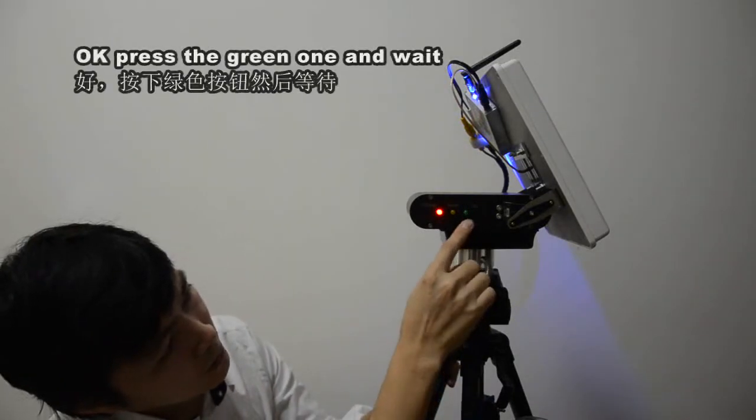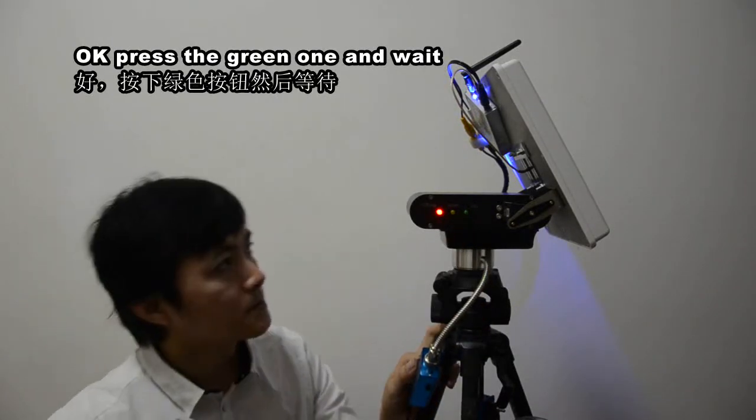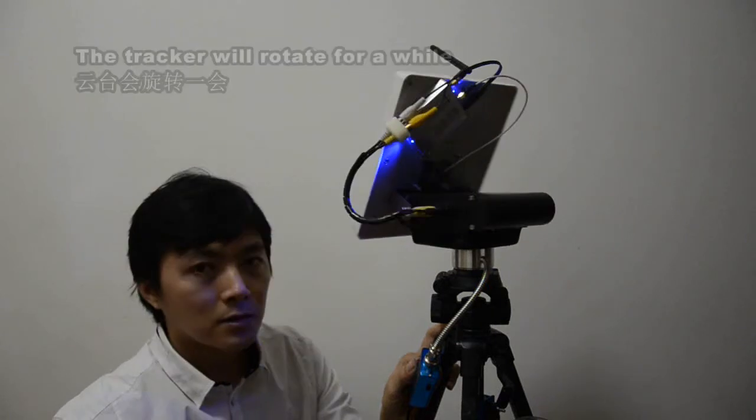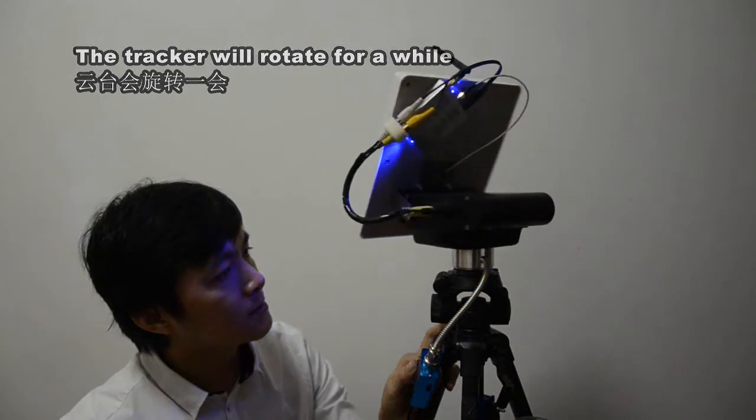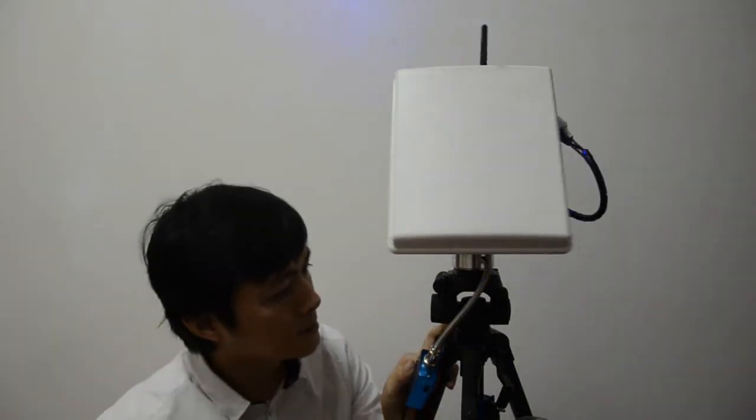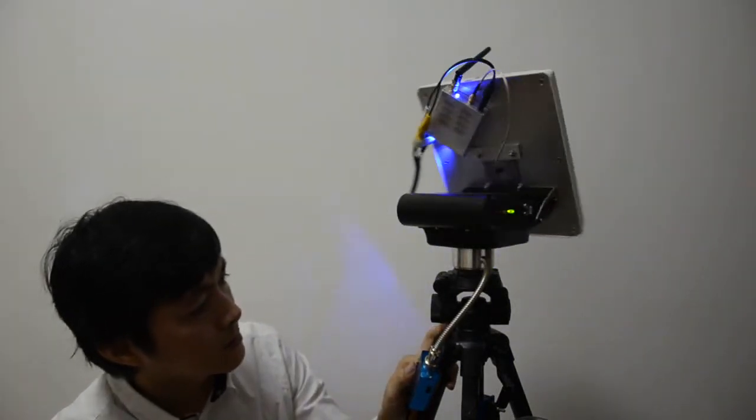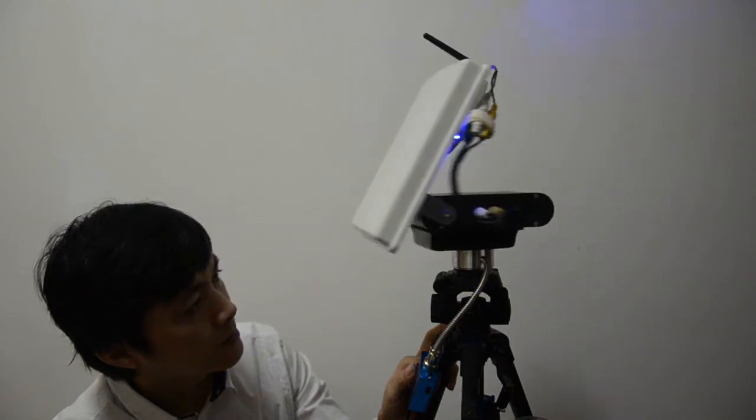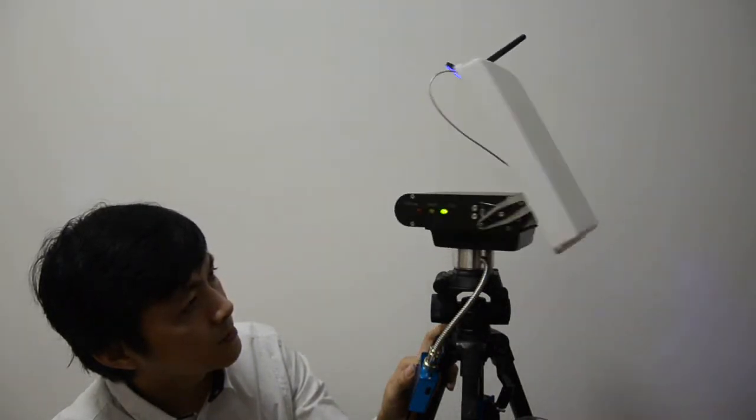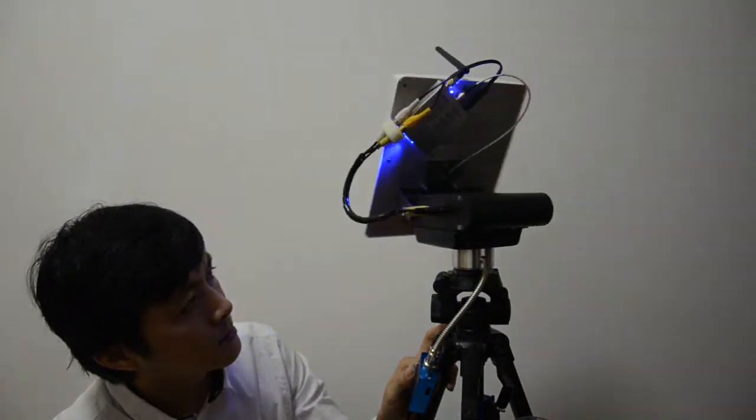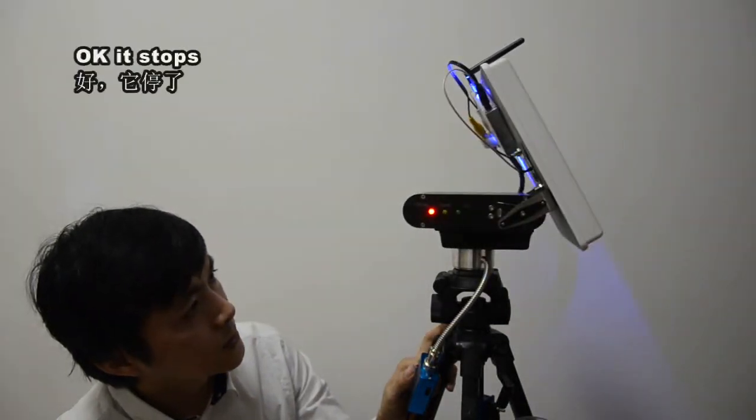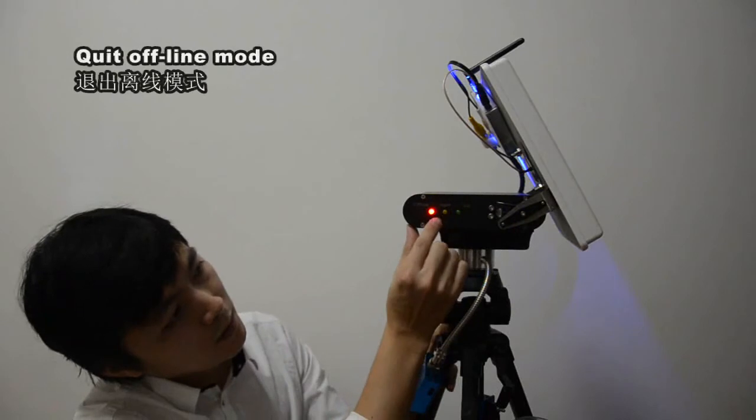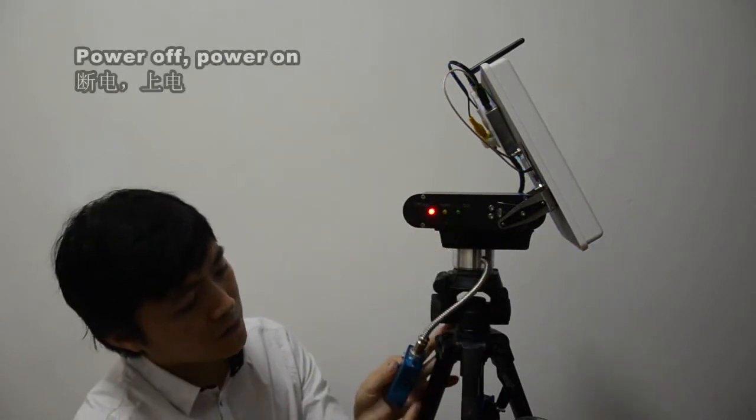Okay, press the green one and wait. The tracker will rotate for a while. Okay, it stops. Quit offline mode. Power off. Power on.